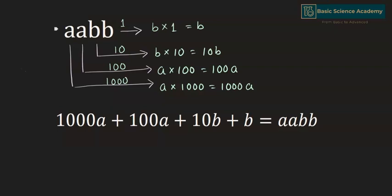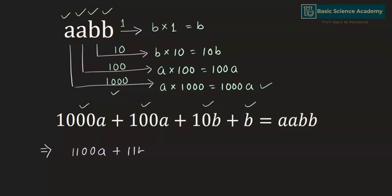We are given the four digit number AABB. Since B is at the ones place its value is B×1 = B, and B is at the tens place so its value is 10B. A is at the hundreds place so its value is 100A, and A is at the thousands place so its value is 1000A. Hence AABB = 1000A + 100A + 10B + B = 1100A + 11B.